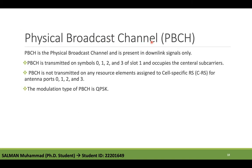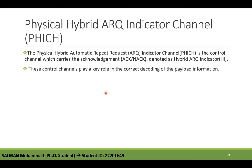The Physical Broadcast Channel (PBCH) is present in the downlink signals only. PBCH is transmitted as symbols 0, 1, 2, 3 of slot 1 and occupies the central subcarriers. PBCH is not transmitted on any resource element assigned to cell-specific reference signals (CRS) for antenna ports 0, 1, 2, and 3. The modulation type for PBCH is QPSK.